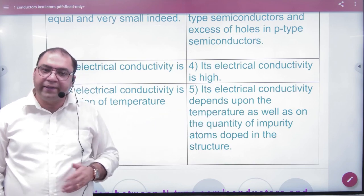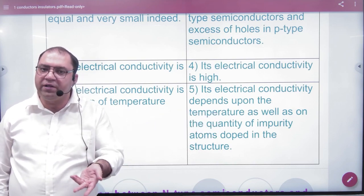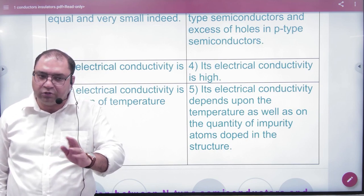In extrinsic semiconductors, there is also a dependency on doping. With doping, you add free electrons or holes, and as the doping amount increases, electrical conductivity increases because you have already introduced additional charge carriers.